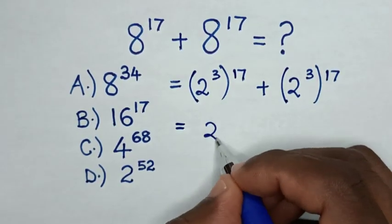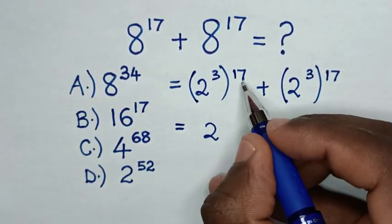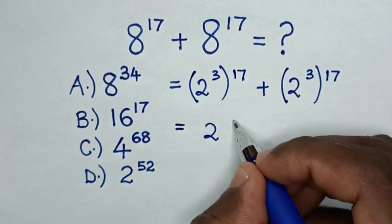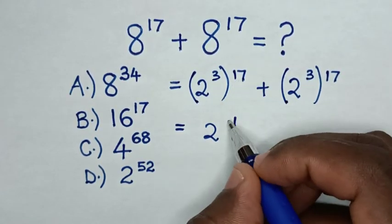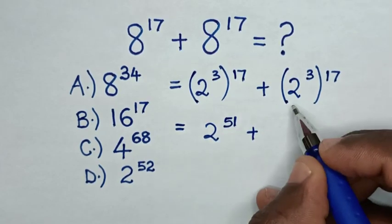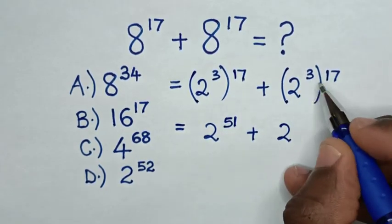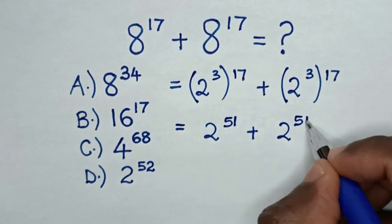Then it will be equal to 2 power of 3 times 17. 3 times 7 is 21, carry the 2, 3 times 1 is 3, plus 2 is 5. So it's 2 power of 51, plus 2 power of 51.